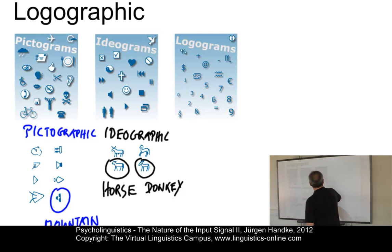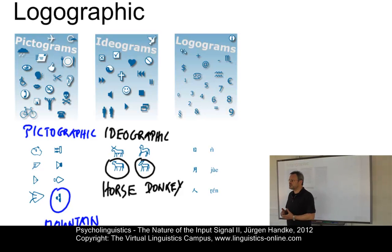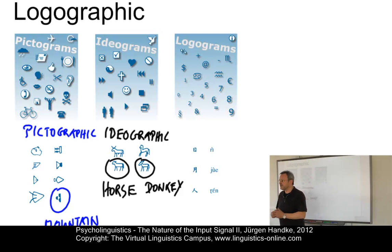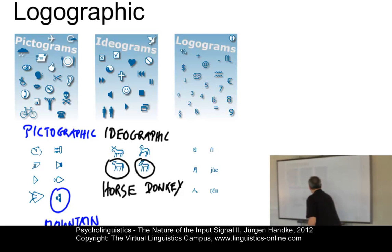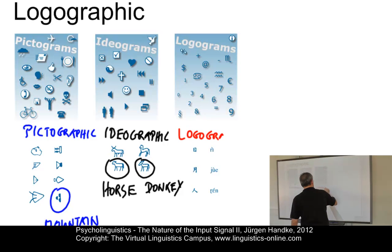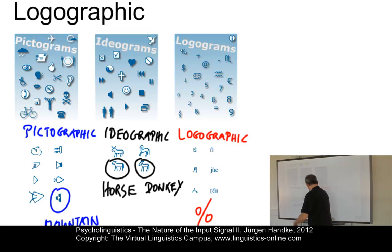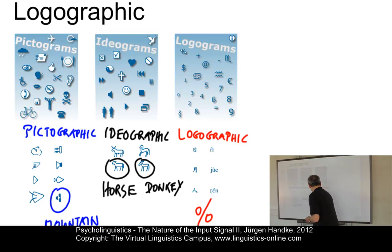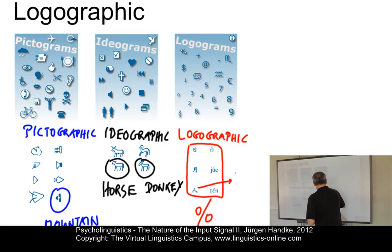The final logographic writing system uses true logograms — abstract logographic symbols whose meaning is no longer identifiable from their shape. Such symbols, like the percent sign, are logograms no longer related to the meaning. The typical examples are, of course, Chinese characters, where here we have the symbol for human.